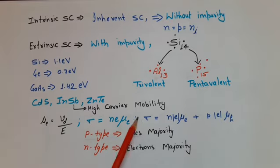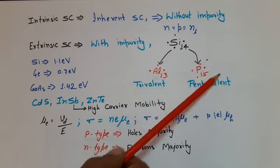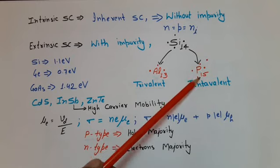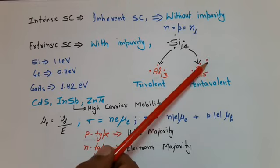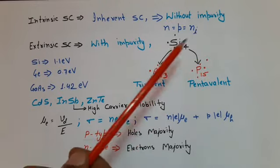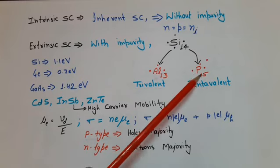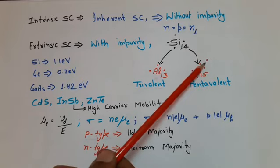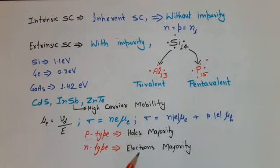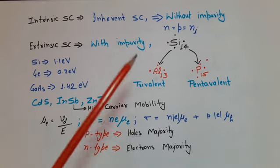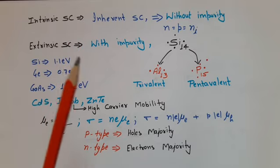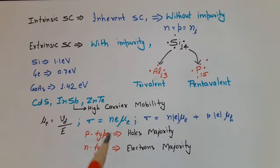Similarly, if we add a pentavalent impurity, which has 5 electrons in its valence shell, then one electron will be extra and that electron is free to move if some electric field is applied across the semiconductor. In this case, when pentavalent impurity is added, electrons are the majority carrier, and this is known as an N-type semiconductor.